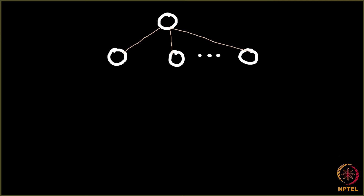This node is having k neighbors, and each of these k neighbors are again having some k neighbors. Each of these k neighbors are again having k neighbors, and so on.